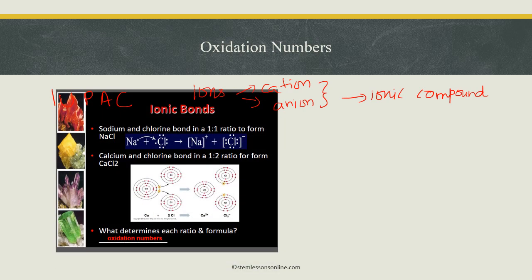For example, if you take sodium and chlorine, sodium forms a positive ion called sodium ion, and chlorine forms a negative ion which is called chloride ion. The oxidation number for sodium is plus 1, and for chloride ion it is negative 1. So that means it is forming a 1 to 1 ratio, and plus 1 and negative 1 will cancel each other. We will write the formula NaCl, and we will name the compound sodium chloride.